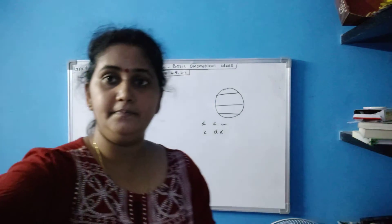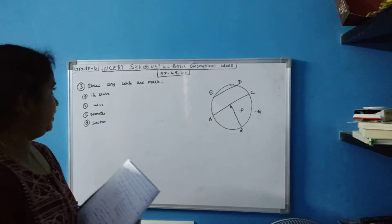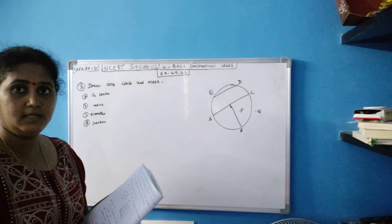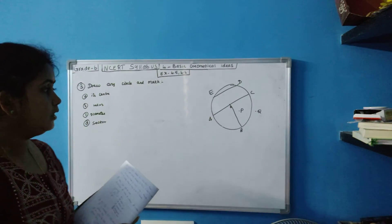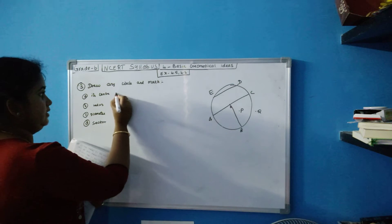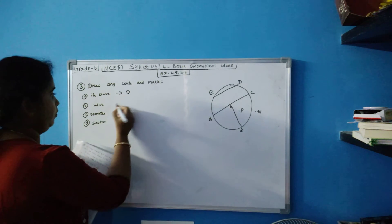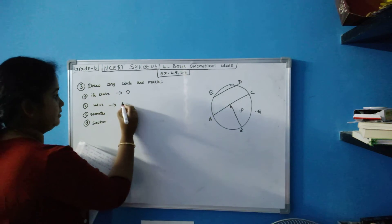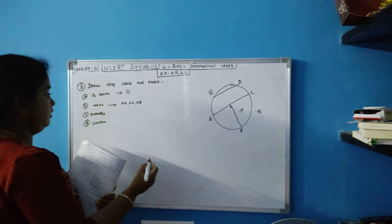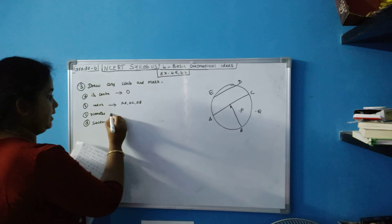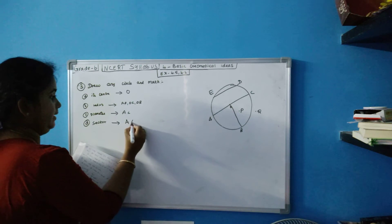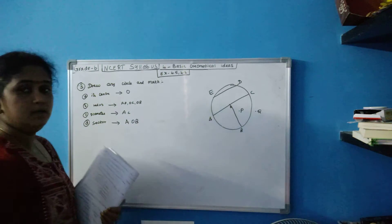Now let's move on to the next sum. They asked you to draw any circle and mark it. So I am drawing the same circle. The center is point O. The radii are AO, OC, and OB. The diameter is AC. The sector is AOB.